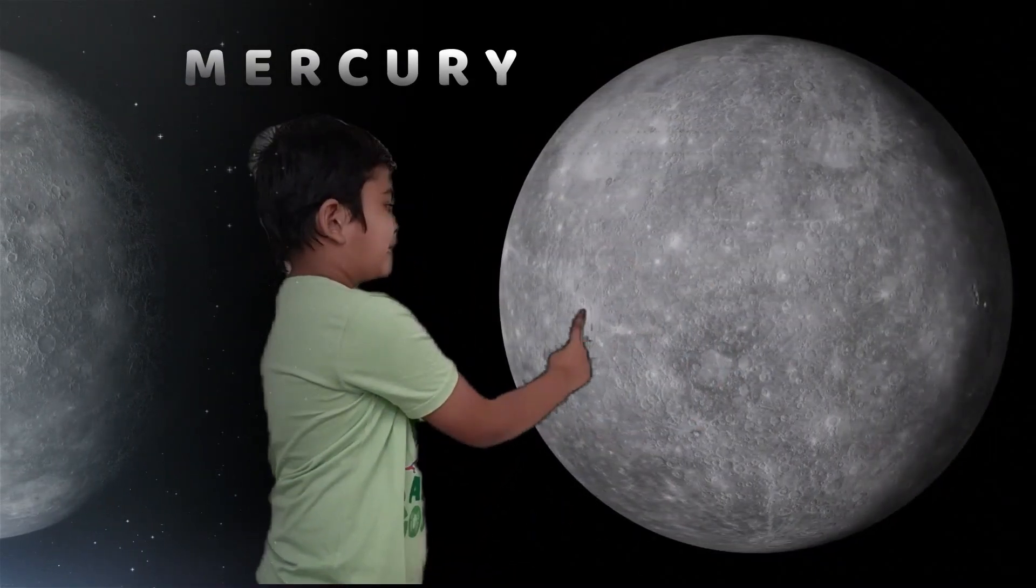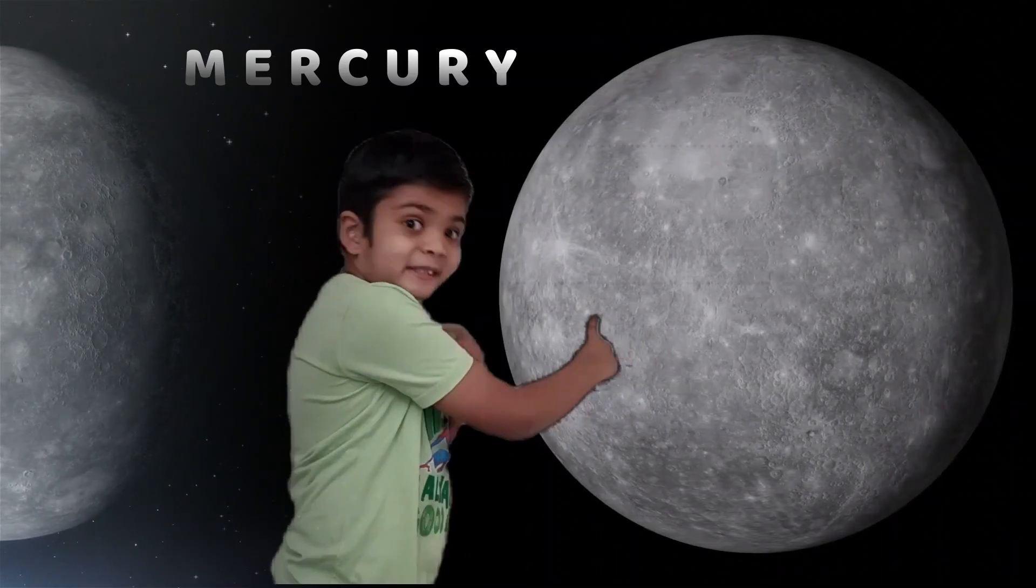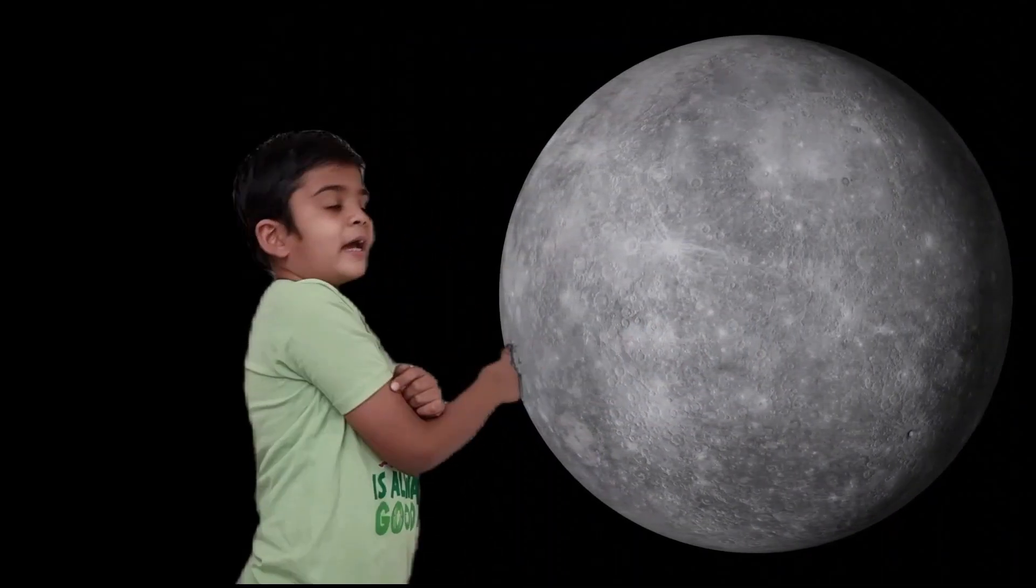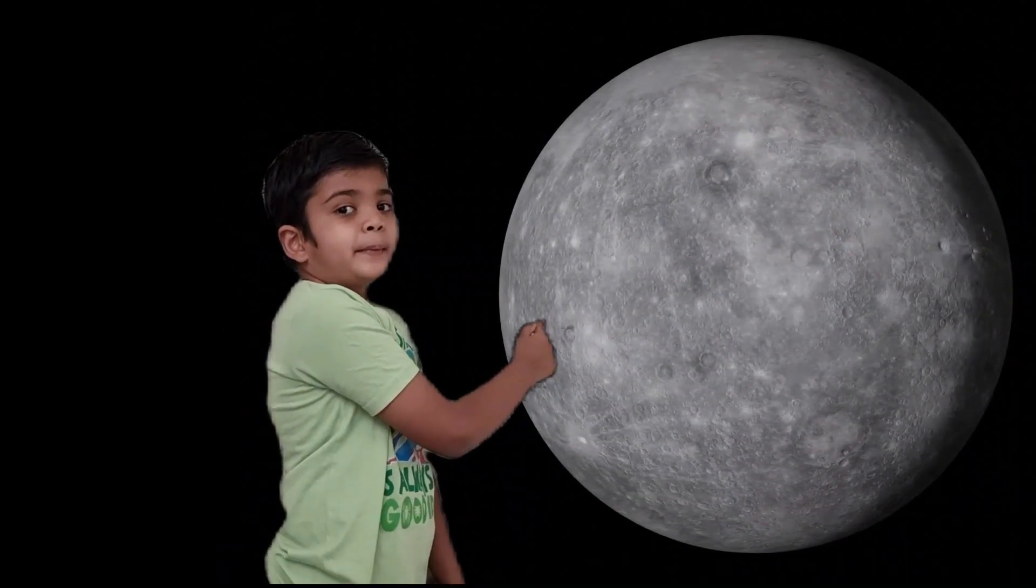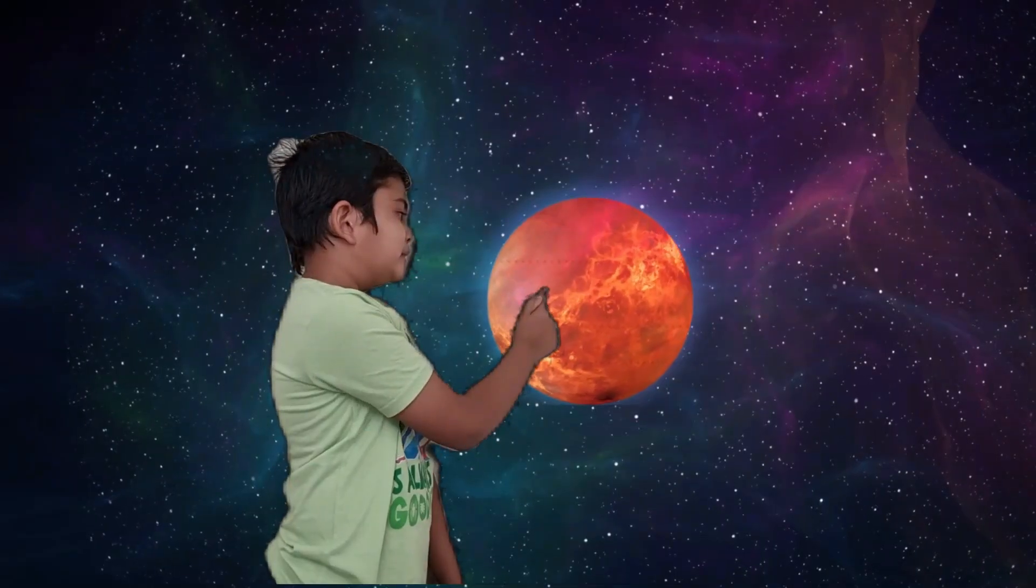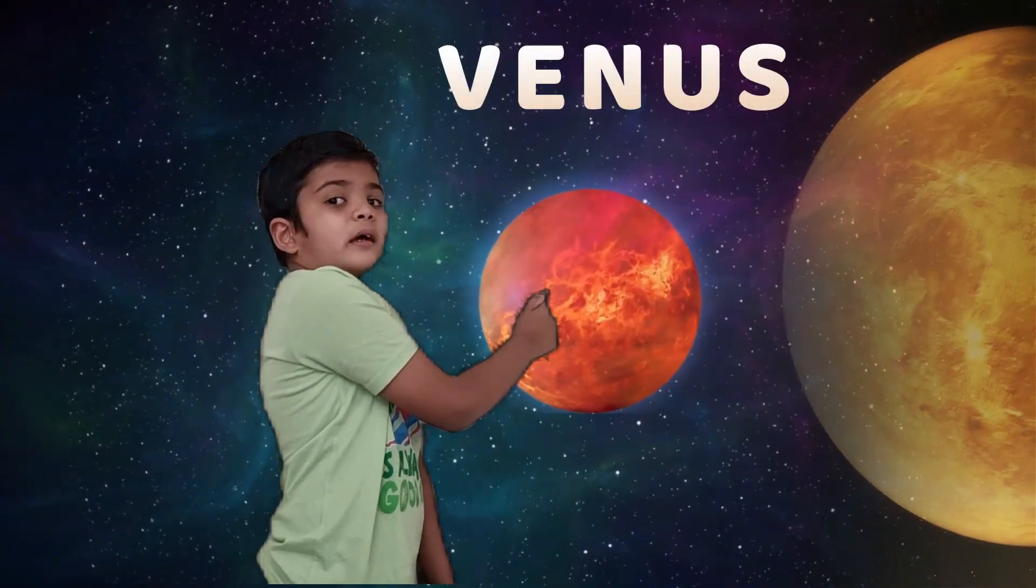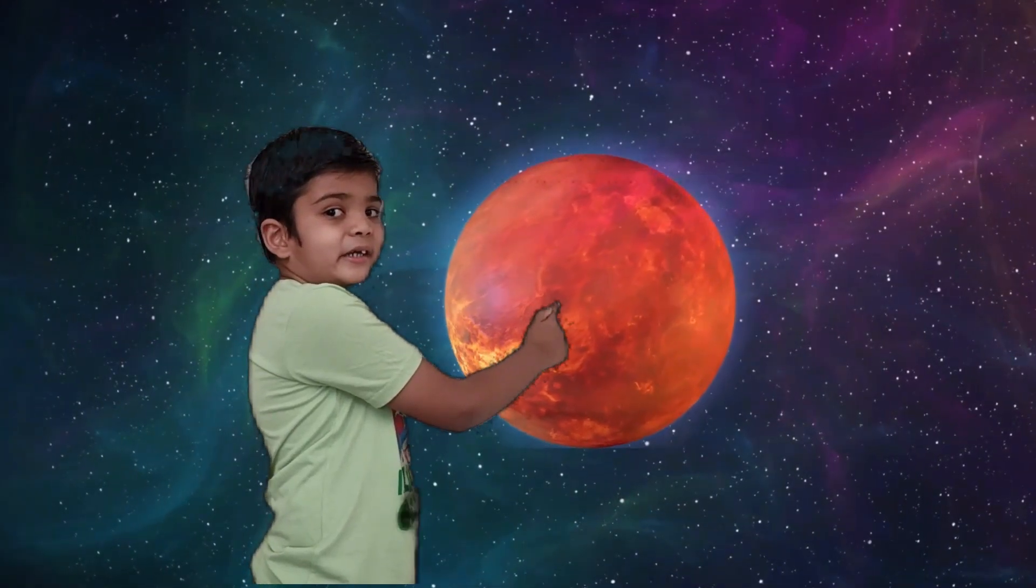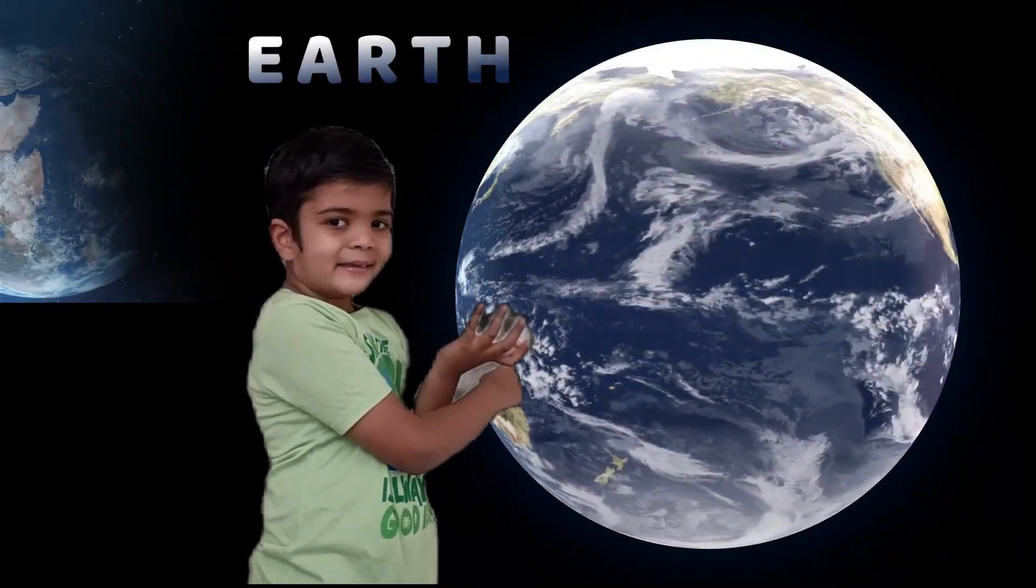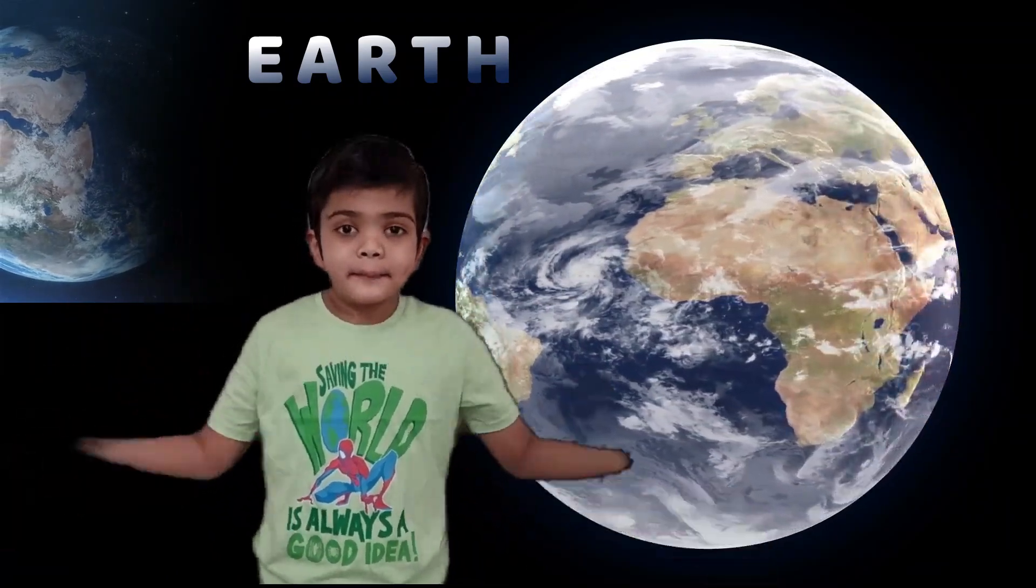Mercury, the sun's first planet, friends. And this is a planet. The second planet is Venus. This is the hottest planet. Third planet is Earth. This is known as blue planet. Gold and water.